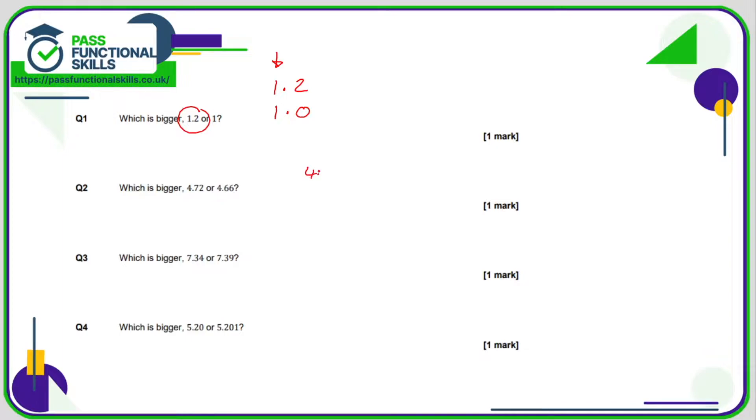Question 2, what's bigger, 4.72 or 4.66? Well in the units all is equal but in the tenths we have a 7 and a 6. 7 is bigger than 6, so 4.72 is bigger than 4.66.